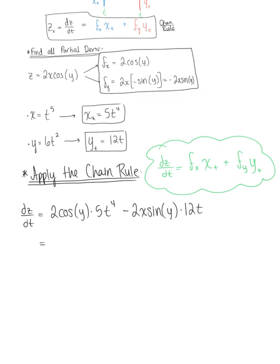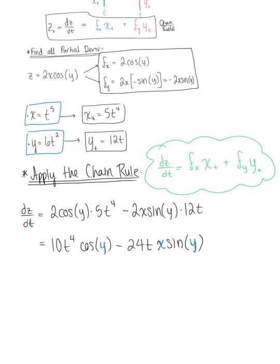Let's simplify this a little before we substitute in. 2 times 5 gives us 10t to the fourth times cosine of y, and then minus 24t times x times sine of y. We can't stop here, because this question is asking us to find the derivative of z with respect to t. We need to replace each x and y with their function in terms of t: x of t is t to the fifth, and y of t is 6t squared.